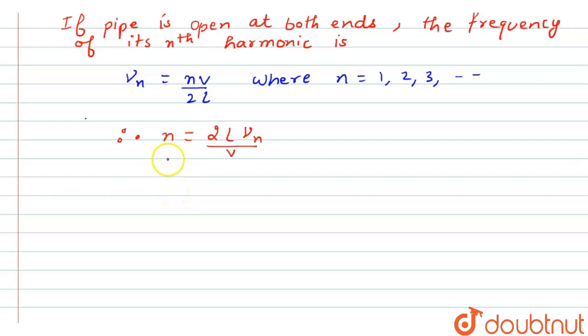We can assume that the nth harmonic of open pipe resonates with 1.1 kilohertz sound source as given in the question. So we can use here the value that nu n equals 1.1 kilohertz. Now I will convert into hertz, so it will be 1.1 times 10 raised to power 3 hertz.